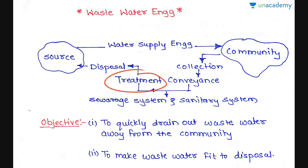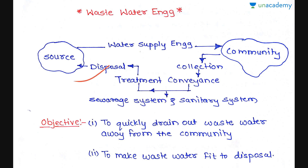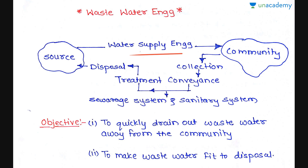The sewerage system leads to treatment. We cannot directly dispose of wastewater generated from residential or industrial areas because it may contain bacteria, viruses, or toxic substances which cannot be disposed of directly into the source. After treatment it is safe to dispose it back into the source. This is the total system of wastewater engineering.